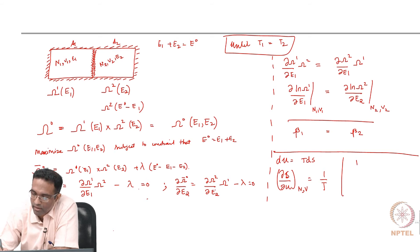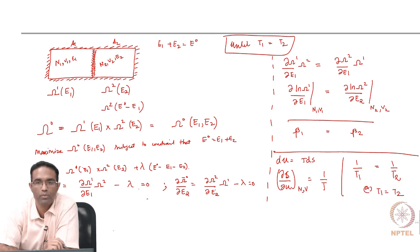At equilibrium, I will have 1 by T1 equal to 1 by T2, or T1 equal to T2. Now, look at this expression here and look at this expression here.